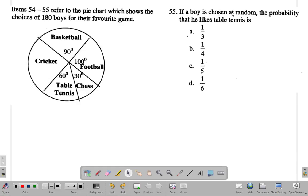It says if a boy is chosen at random, the probability that he likes table tennis is. All right, now remember chosen at random.